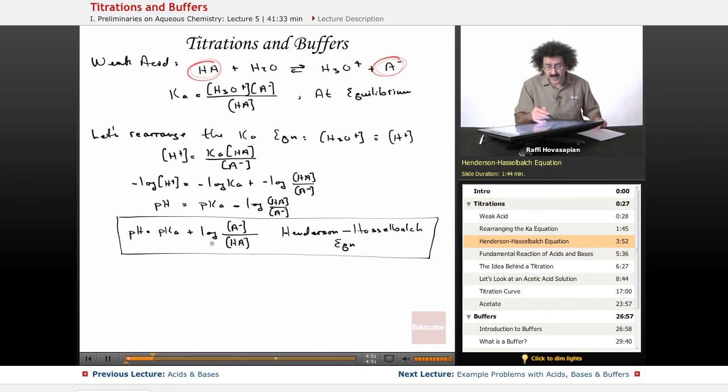Let's just talk about what this says. This says that in a weak acid solution, if I ever want to know the pH of that solution, and if I happen to know the pKa, the relationship between the pH, the pKa, and the concentration of acid and conjugate base is expressed this way.